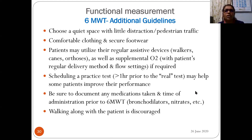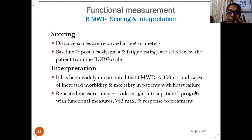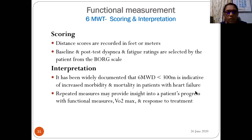Scoring: distance is recorded in meters. Baseline and post-test dyspnea and fatigue ratings are selected from the Borg scale — pre and post Borg scale ratings are very important. Interpretation: a six-minute walk distance of less than 300 meters is indicative of increased morbidity and mortality in patients with heart failure. Repeated measures provide insights into a patient's progress and response to treatment.